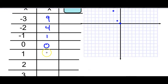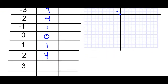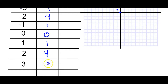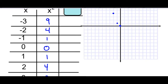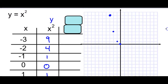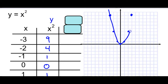1 squared is 1, 2 squared is 4, and 3 squared gives you 9. So it's symmetrical about the y-axis — you can see 1, 1, 2, 4, 3, 9. Connecting the dots, we get a parabola.